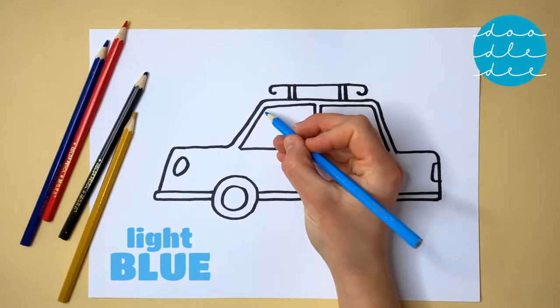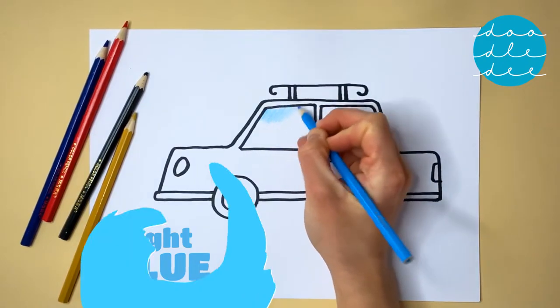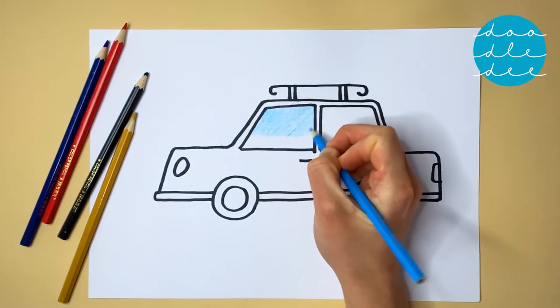Let's start with the light blue for the windows. We can color the one at the front and one at the back.